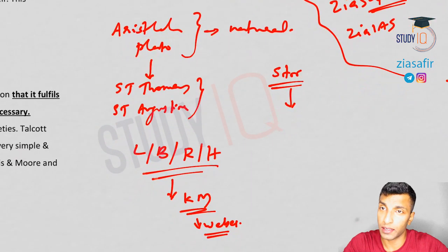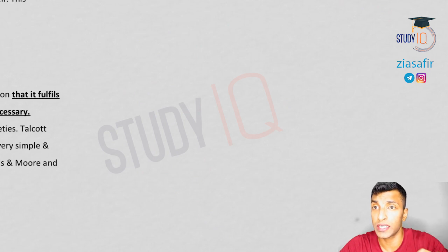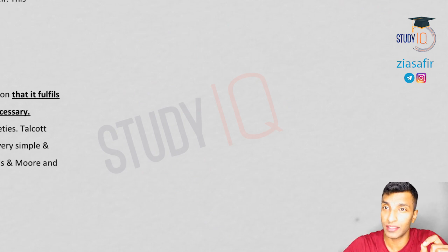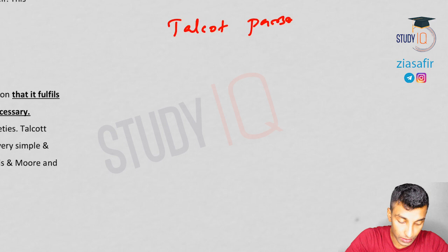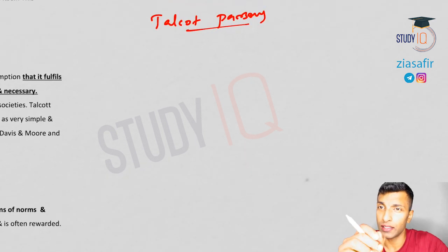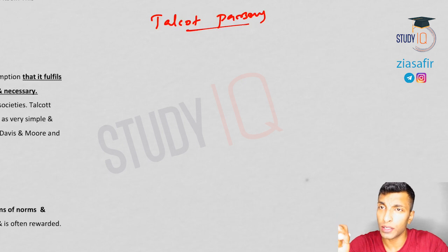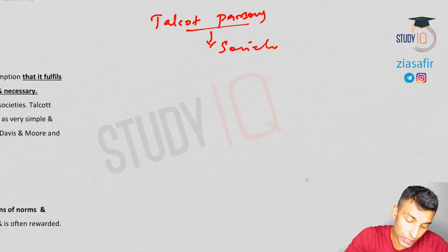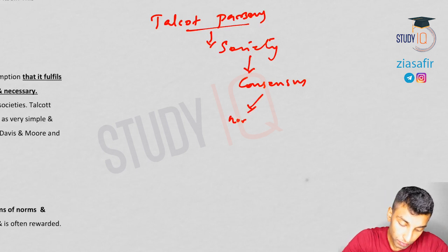Let's get started with the discussion on structural functional theory — this is a very important discussion and you should expect a question on it. In structural functional theory, we will first start with Talcott Parsons. When we discuss Parsons in the thinkers chapter, he is a very difficult thinker, but here his theory on stratification is very simple. Just one paragraph is enough — you won't get a separate question only on Talcott Parsons' stratification theory. If the question is about functional theory, you need to be able to write a paragraph.